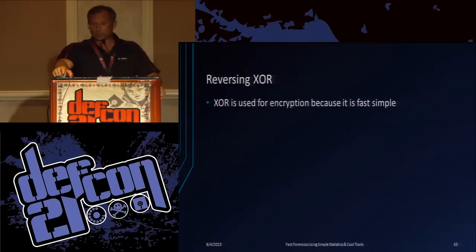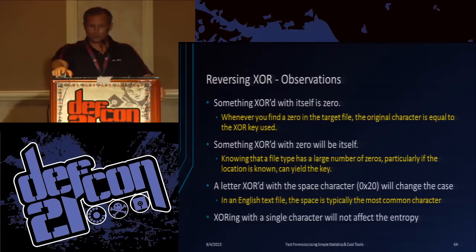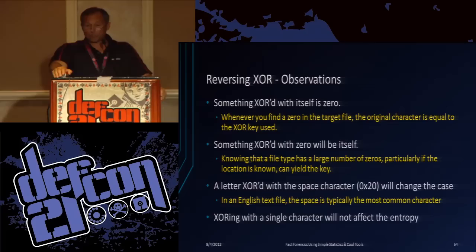We might actually have time for demos. I didn't think I'd get through it this fast because there's so many slides. People said you're not going to get through 75 to 80 slides in 45 minutes - but there's lots of pictures. So reversing XOR - something XOR with itself is zero. Something XORed with zero will be itself.